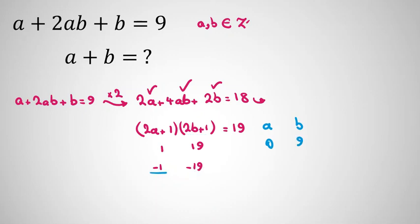2a plus 1 equals negative 1, so 2a equals negative 2, so a equals negative 1. 2b plus 1 equals negative 19, so 2b equals negative 20, divided by 2, equals negative 10.